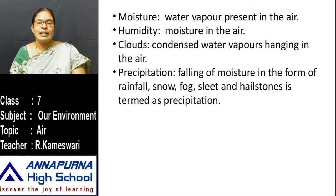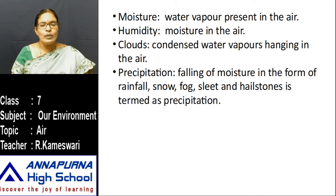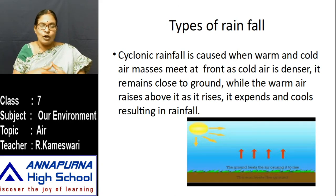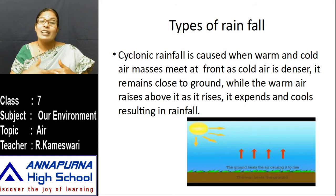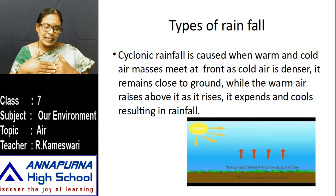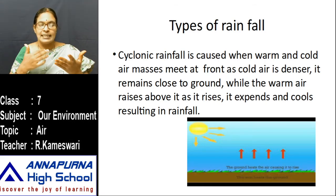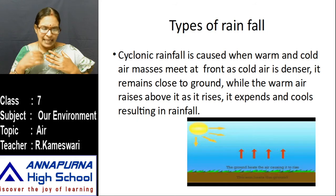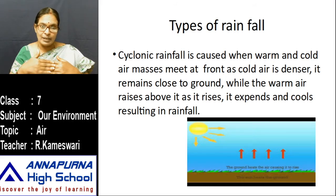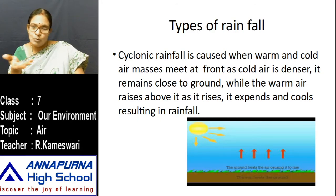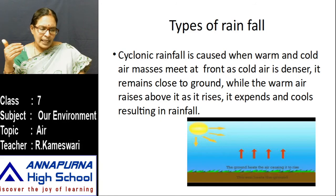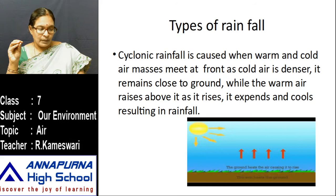Now let us discuss the different types of rainfall. Through the water cycle, water evaporates from the land and different water bodies — oceans, rivers, ponds. It becomes water vapor and mixes into the air — that is called moisture. How much moisture is there in the air is called humidity.